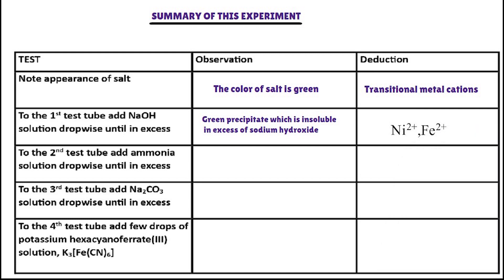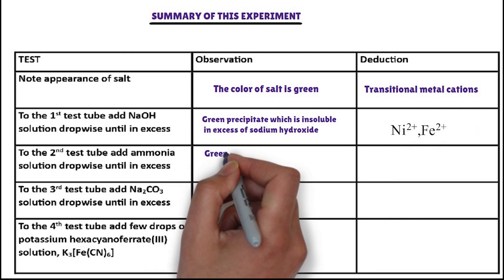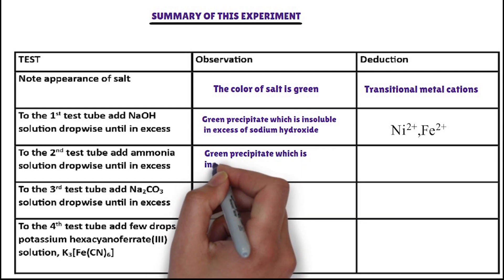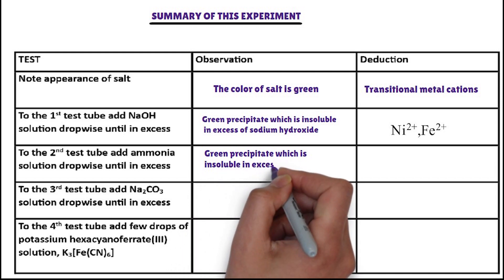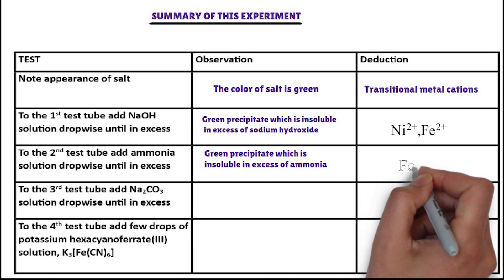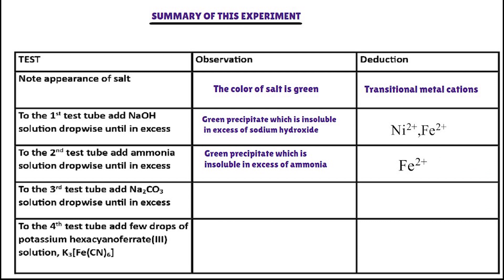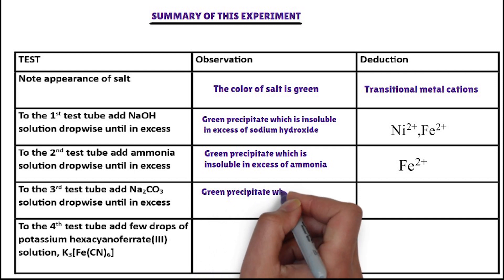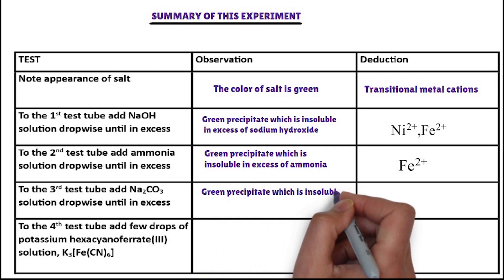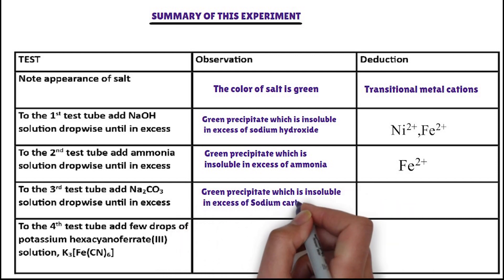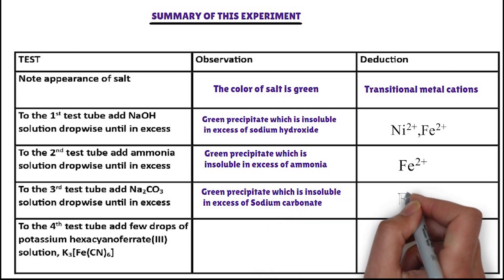In the second test tube, ammonia solution is added dropwise. The cation from the above cations that forms a green precipitate with ammonia solution, insoluble in excess ammonia, is iron(II) ion. In the third test tube, sodium carbonate solution is added dropwise. The cation that forms a green precipitate with sodium carbonate, insoluble in excess, is iron(II) ion.